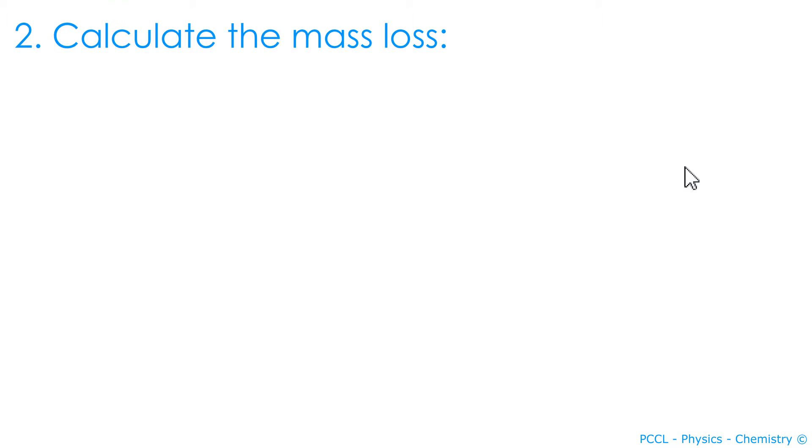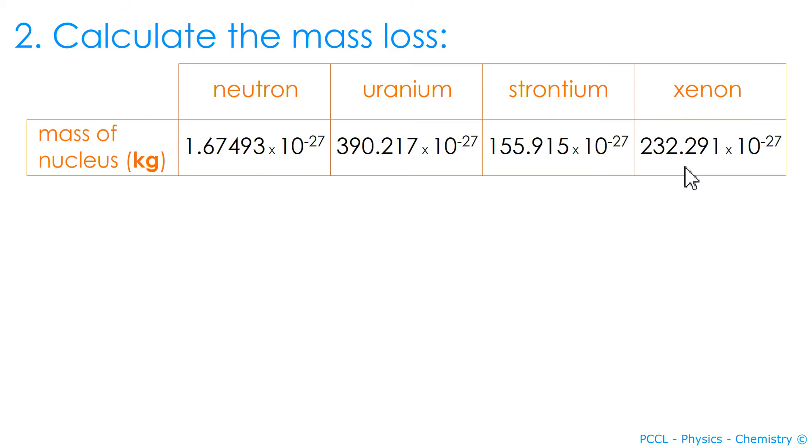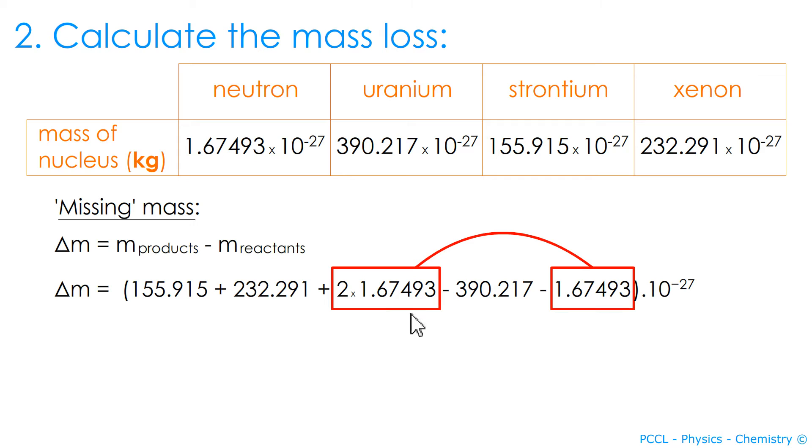You will be asked to calculate the variation in mass delta M. If the masses are in kilograms, that's natural. Don't memorize this. You do final minus initial, as with any variation. Here, you can simplify because there are the two end product neutrons minus the initial neutron. Delta M is negative, inevitably, since it is about a loss of mass.